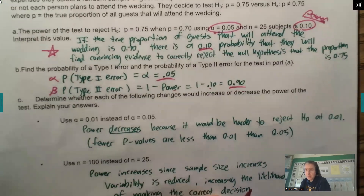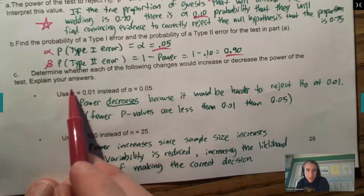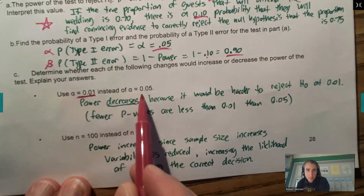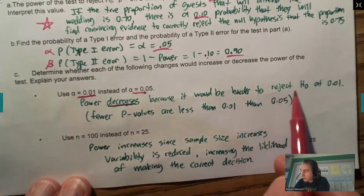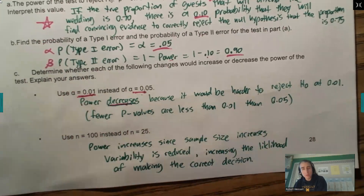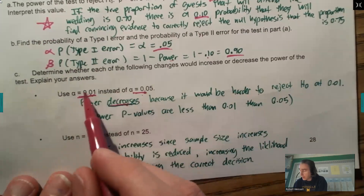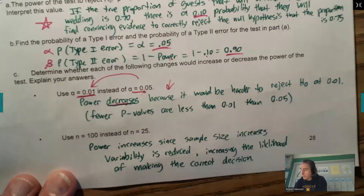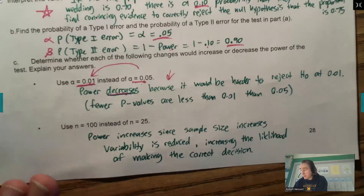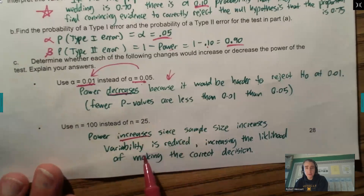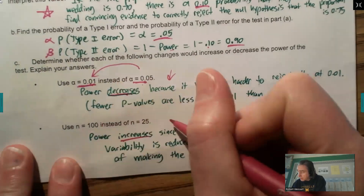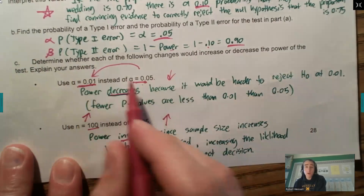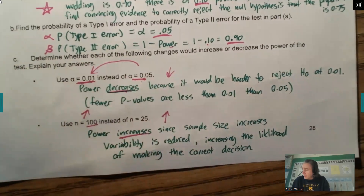Let's look at what happens when we play around with numbers. If I use a smaller alpha level — say 0.01 instead of 0.05 — what happens to the power? It's going to decrease. It's harder to reject the null at 0.01; there are fewer p-values less than 0.01 than 0.05, so I'll have a less powerful test. Power decreases when alpha goes down. If my sample size goes up, my power is going to increase — reduced variability means the likelihood of making the correct decision goes up. Bigger sample size: power goes up. Lower alpha: power goes down.